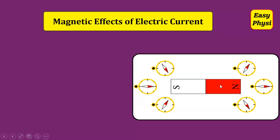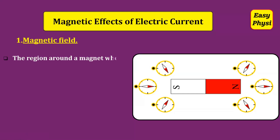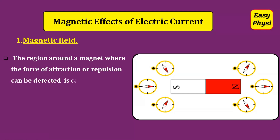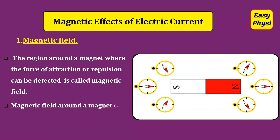Magnetic Effects of Electric Current. Magnetic Field: The region around a magnet where the force of attraction or repulsion can be detected is called magnetic field. Magnetic field around a magnet can be detected by using a magnetic compass.